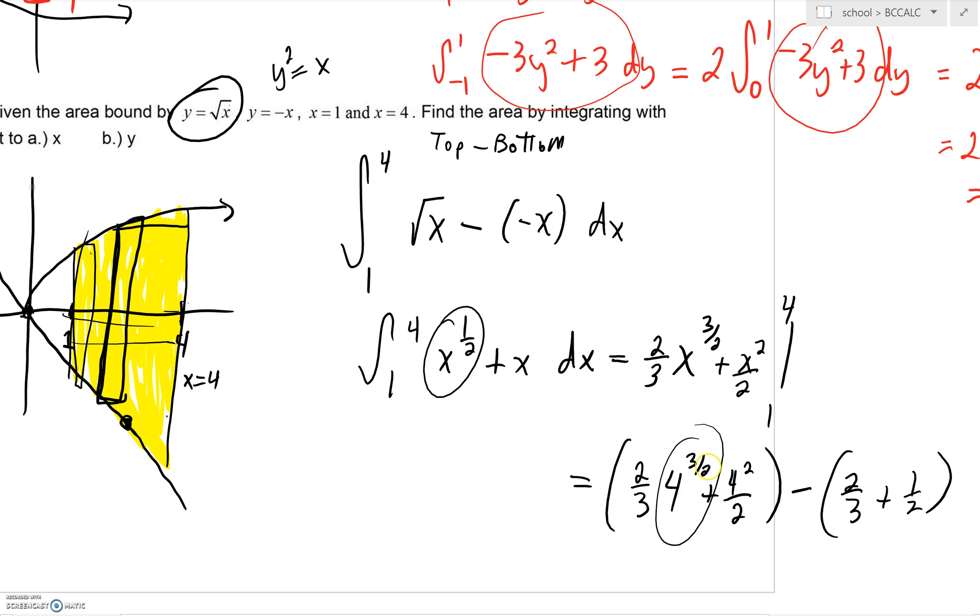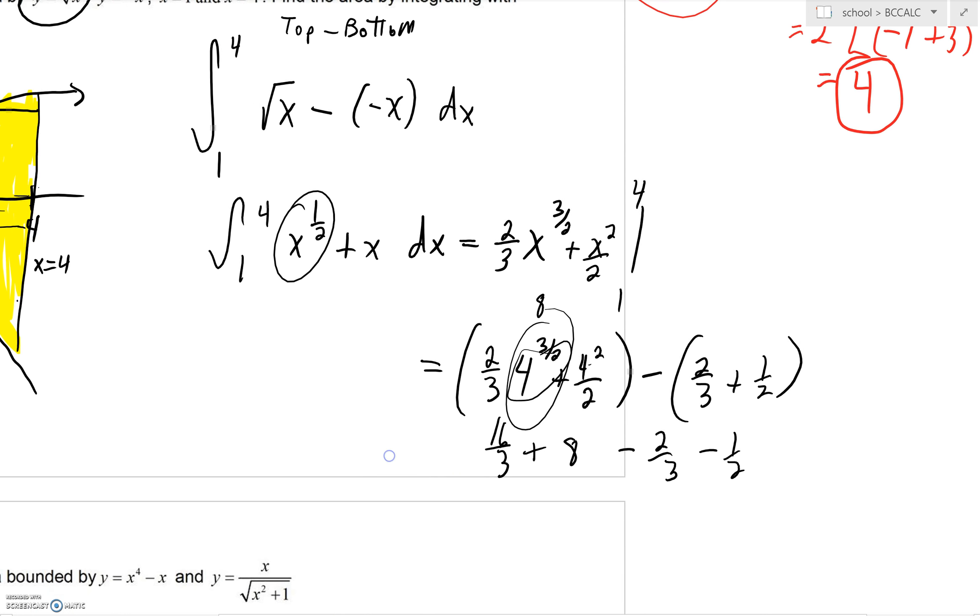So 4 to the 3 halves, that's the square root of 4, which is 2, 2 cubed is 8. Here we'd get 16 thirds. 4 squared is 16 and 16 divided by 2 is 8. Now we could say minus 2 thirds and minus 1 half. And then we just have to do a little bit of cleaning up. 16 thirds minus 2 thirds, that's going to be 14 thirds. And 8 minus 1 half, that's 16 over 2 minus 1 over 2 and that's 15 all over 2. Let's get a common denominator, multiply by 2 over 2, multiply by 3 over 3. We'd have 28 over 6 plus 45 all over 6.